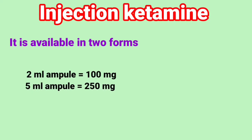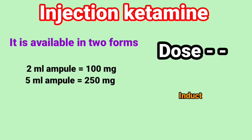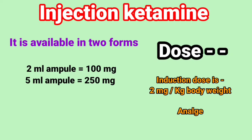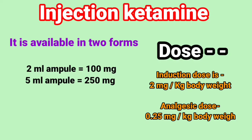And the 5 ml ampoule which contains 250 mg. Now the dose of ketamine: its induction dose is 2 mg per kg body weight, and the analgesic dose is 0.25 mg per kg body weight.